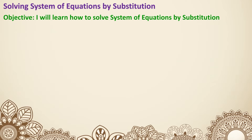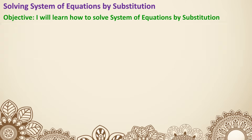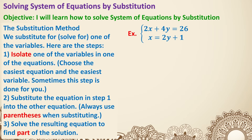Now let's get into today's lesson. The most basic way to solve a system is by graphing. But if the solutions are fractions, we can't graph fractions very precisely, which is why graphing is not going to give us the most accurate answers. So the most accurate answer is typically gotten from algebra. There are two algebraic methods we will learn, and we will always write our answers as an ordered pair. The first method is called the substitution method.